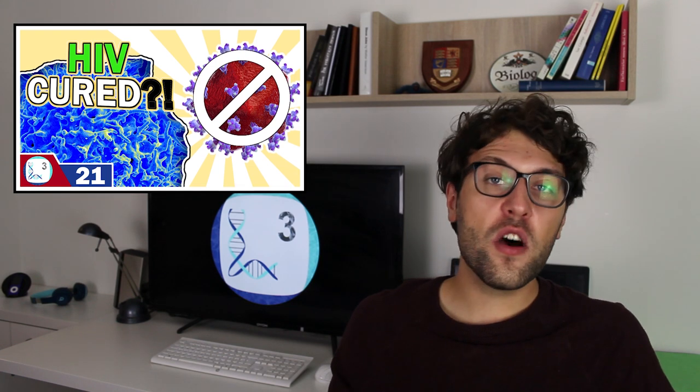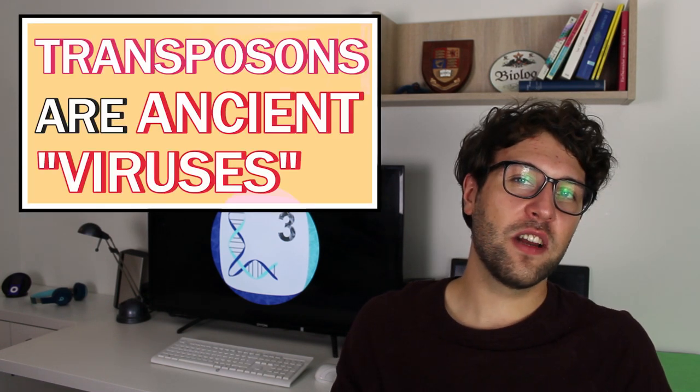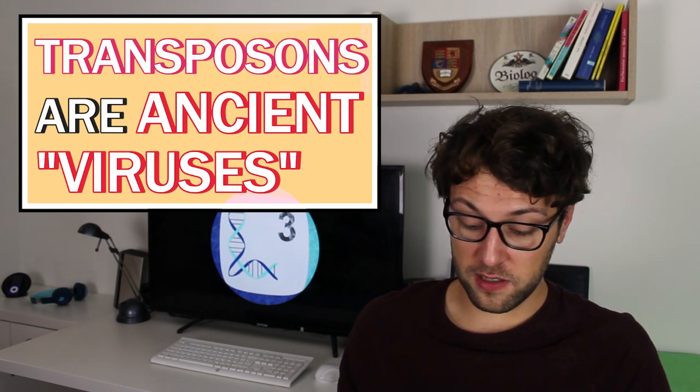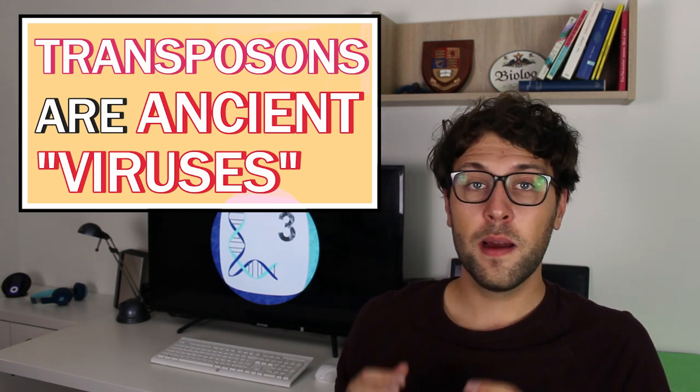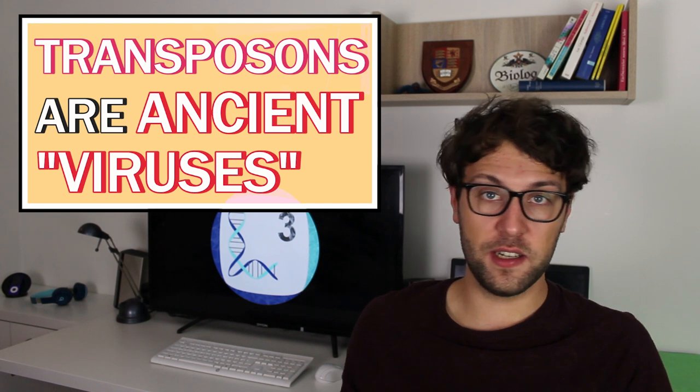You might remember this mechanism from an earlier video where we discussed the conversion of RNA into DNA. We're talking about the HIV video. HIV is also able to convert its RNA genome into DNA which is then integrated into the DNA of immune cells. This is why I also like to call transposons ancient viruses. They used to be viruses but then they became part of our DNA.